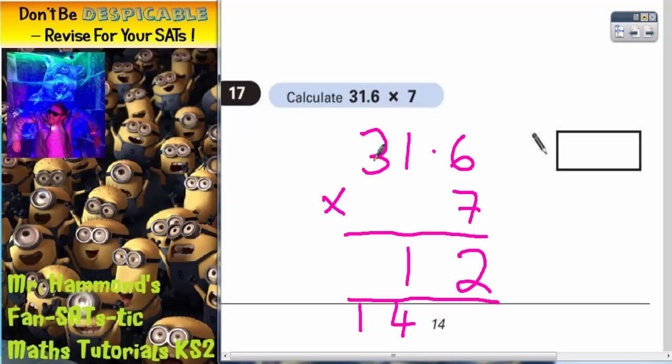7 times by 3 is 21. Plus that 1 is 22. Put your 2 in and you could carry the 2. But because we've finished all the columns now, we just put the extra 2 straight in.